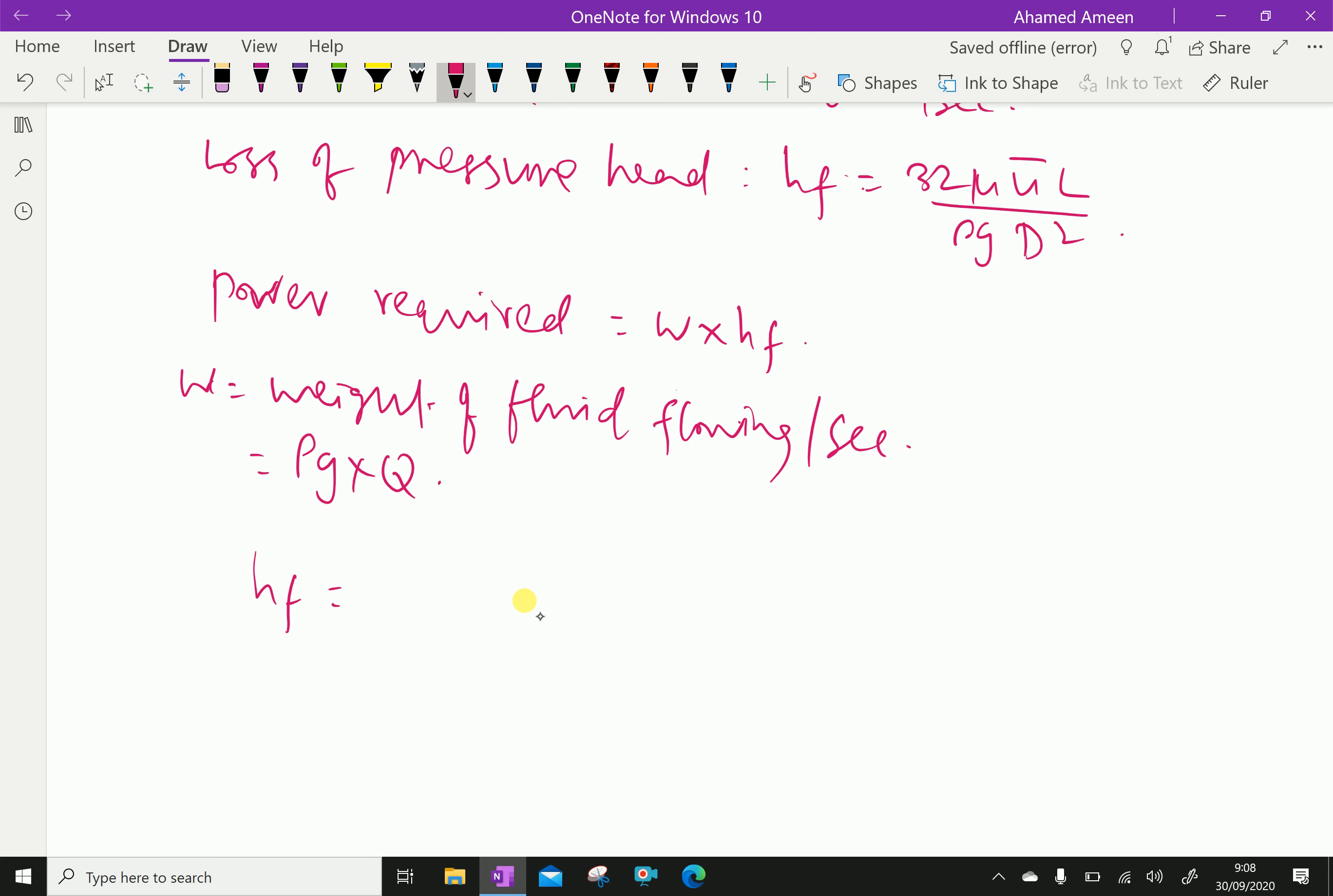Therefore power P equal w is rho g into Q into hf is 32 mu u bar L over rho g d square. Rho g cancels.